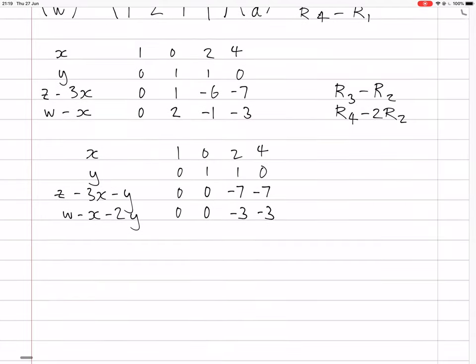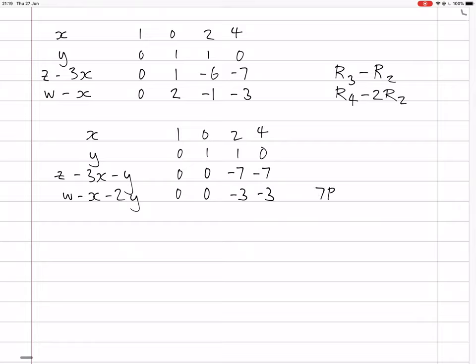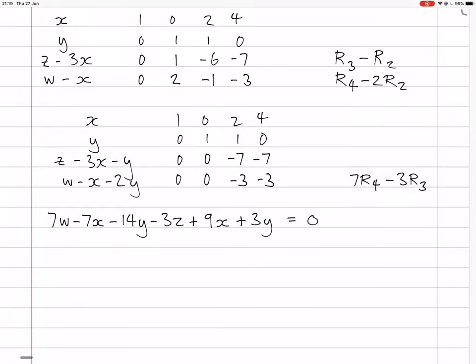That's good, because now these two rows are going to be able to cancel out to give you a row of zeros. So you do 7 times row 4 minus 3 times row 3. That will give you a row of zeros, so then you'll have 7w minus 7x minus 14y, minus 3z plus 9x plus 3y, and that equals 0. So we can simplify this, so we have minus 7x plus 9x is 2x, minus 14y plus 3y is minus 11y, and there's just a minus 3z, and there's just plus 7w equals 0.